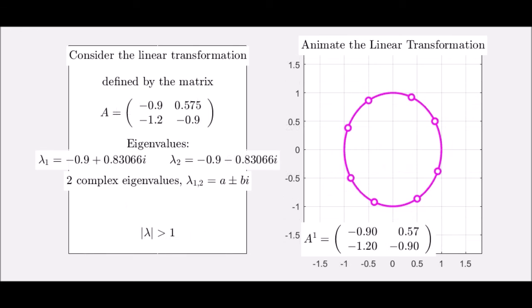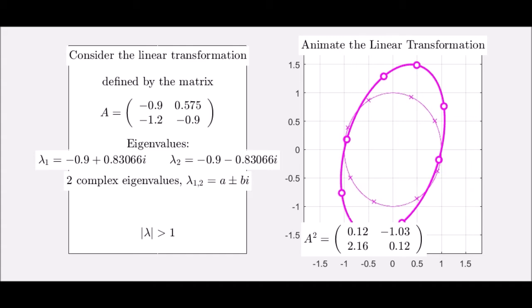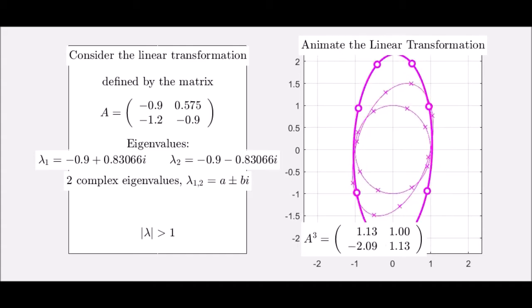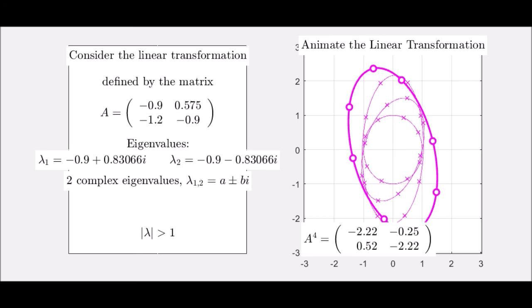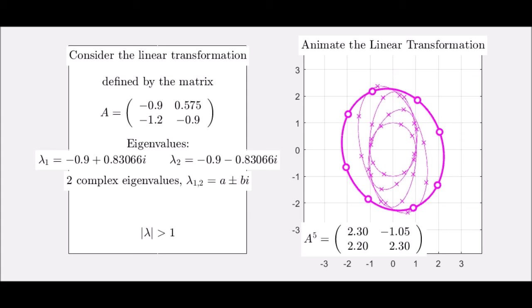In one other case, I thought I'd pick a two by two case that does have complex eigenvalues, but the eigenvalues are relatively small compared to negative two plus or minus three I. In fact, these are negative 0.9 plus or minus 0.83066I.